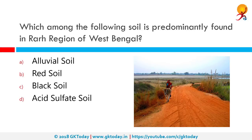Which among the following soil is predominantly found in the Rarh region of West Bengal? Rarh is the region that intervenes between the Baghmundi and the Ganges delta. Parts of the districts of Murshidabad, Birbhum, Pakur, Purba Burdwan, Paschim Burdwan, Purba Medinipur and Paschim Medinipur constitute this region. The region is above 50 to 100 meters and this area is covered predominantly in red soil.